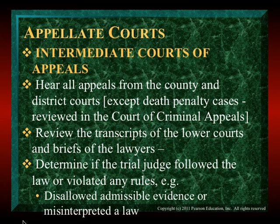The intermediate court of appeals hears all appeals from county and district courts except death penalty cases, which go automatically to the Court of Criminal Appeals. They sit in banks of three judges to handle the volume of cases. They review the transcript of the lower court, the briefs — the written arguments — and listen to oral arguments. They determine if the trial judge followed the law: did he disallow evidence, misinterpret the law, or improperly sustain or overrule objections?